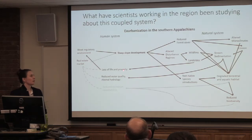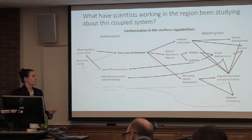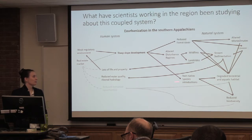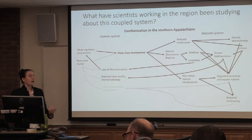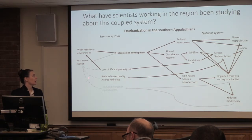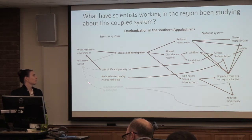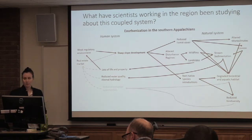Scientists at the Coweta LTER have really been studying a lot of the things in these black arrows. But some things marked by the gray arrows or text haven't been looked at very extensively. There have been some studies on the real estate market and the weak regulatory environment, but as far as I know there haven't been studies connecting things like reduced ecosystem services to a decline in the real estate market or some other kind of final negative feedback loop.